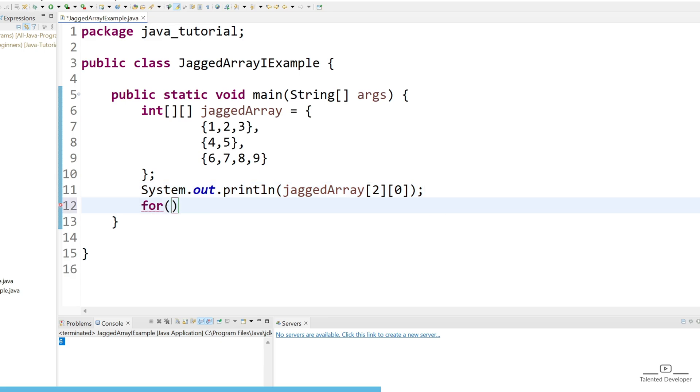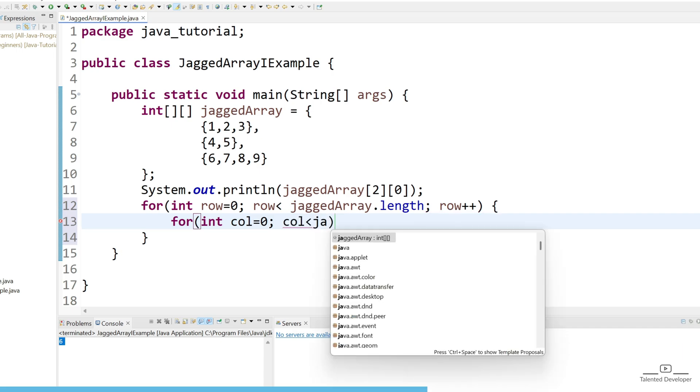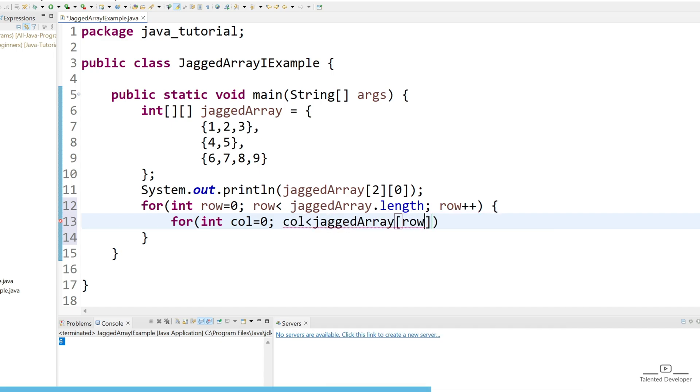How can we iterate? We can iterate the same as how we iterated the 2D array. Let's create a for loop: int row = 0; row < jaggedArray.length; row++, because it's an increment. Then similarly you can use column also: int col = 0; col < jaggedArray[row].length, because at first we're going to get one array, that's why we're using jaggedArray[row].